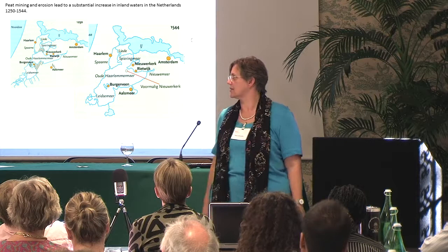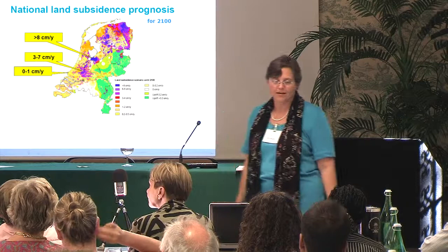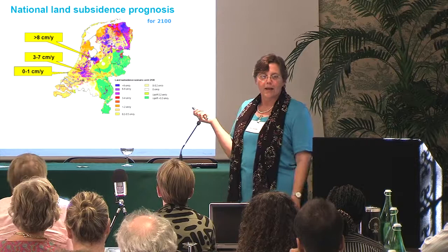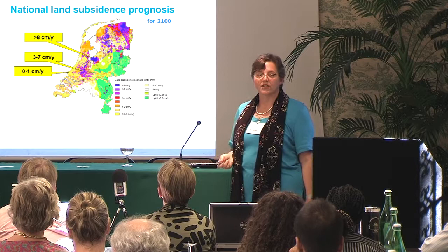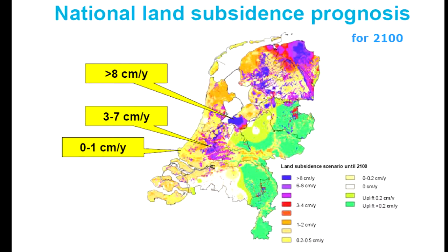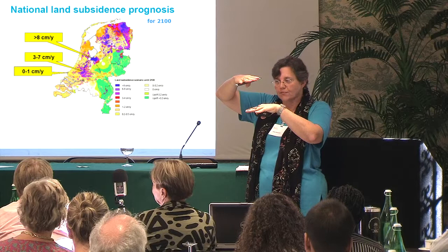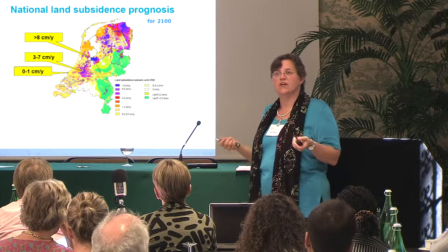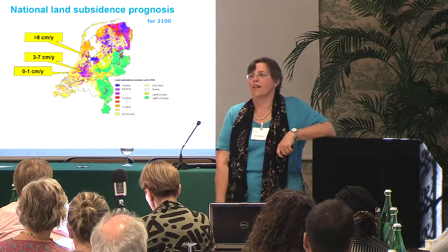Between 1250 and 1544, three distinct inland lakes grew into one large body — the Haarlemmermeer. Even before fossil fuels, humans had a locally intense impact. The yearly subsidence prognosis for 2100 in the blue parts of the Netherlands is eight centimeters per year — one meter within 16 years. One well-intentioned intervention — feeding people grain — has led to a thousand years of dealing with side effects.